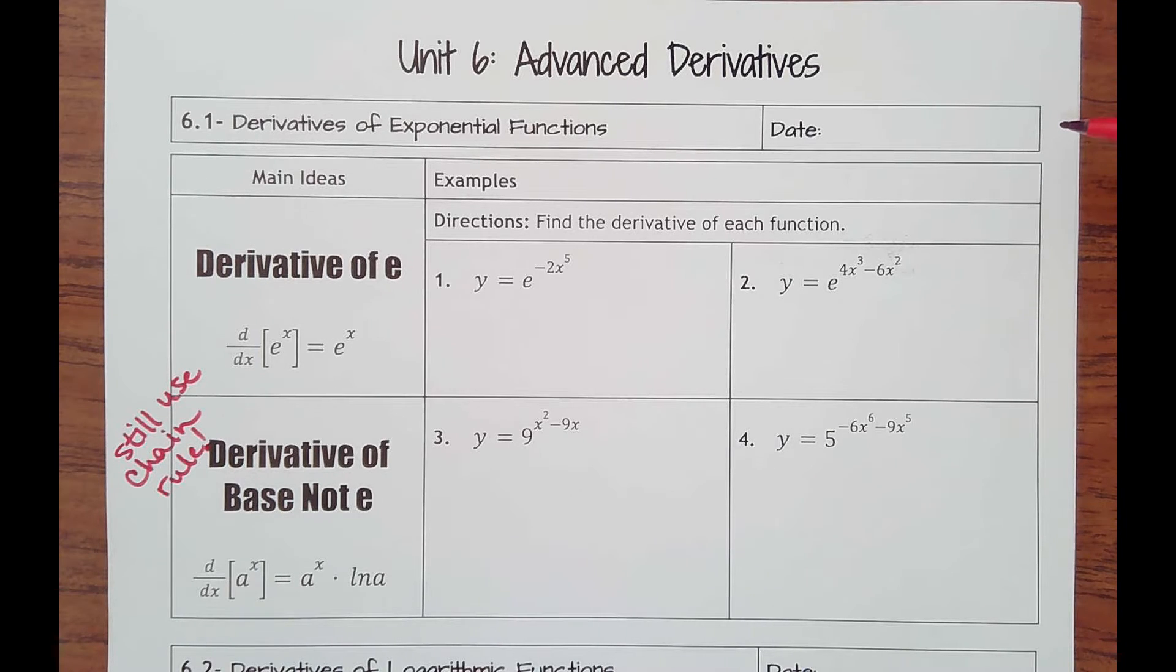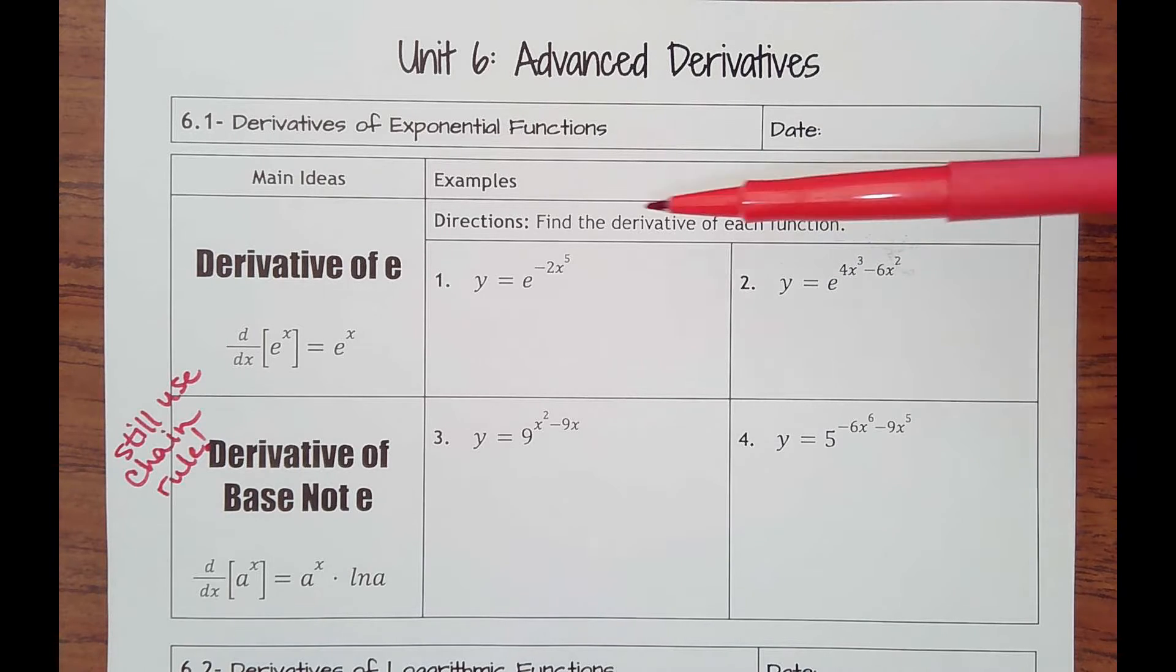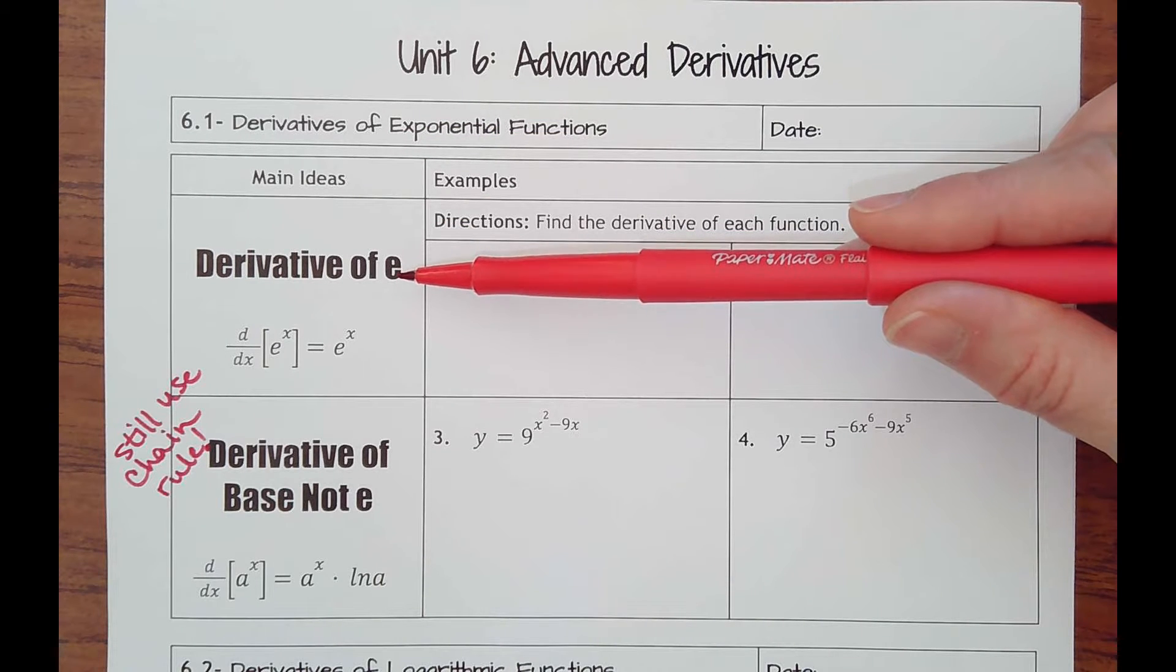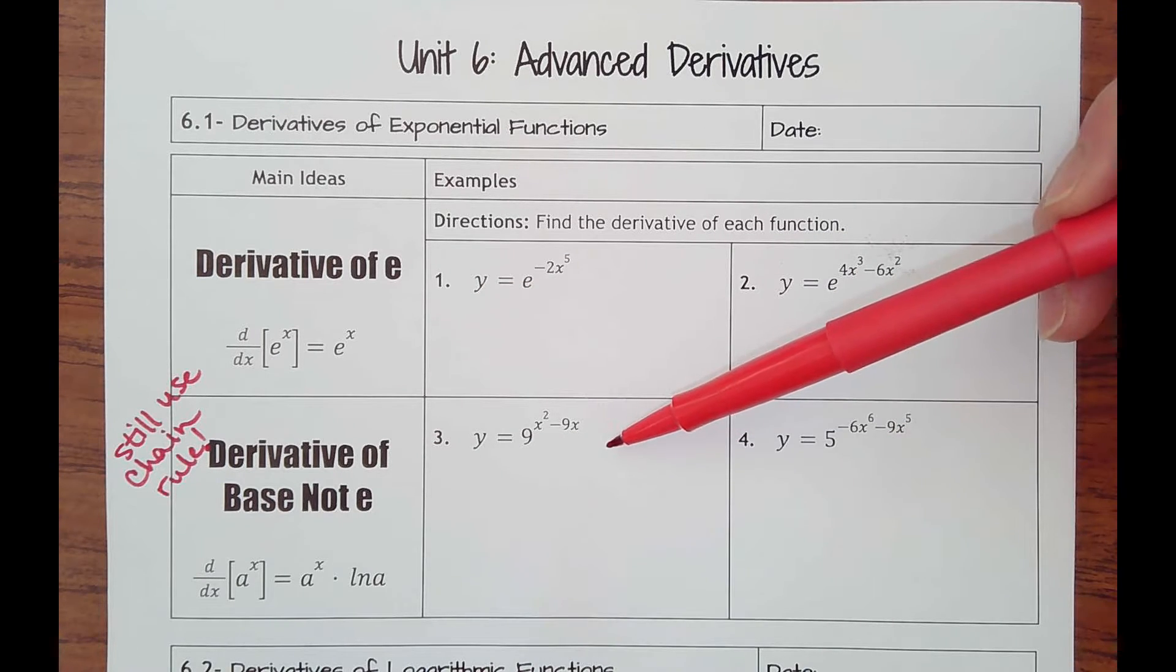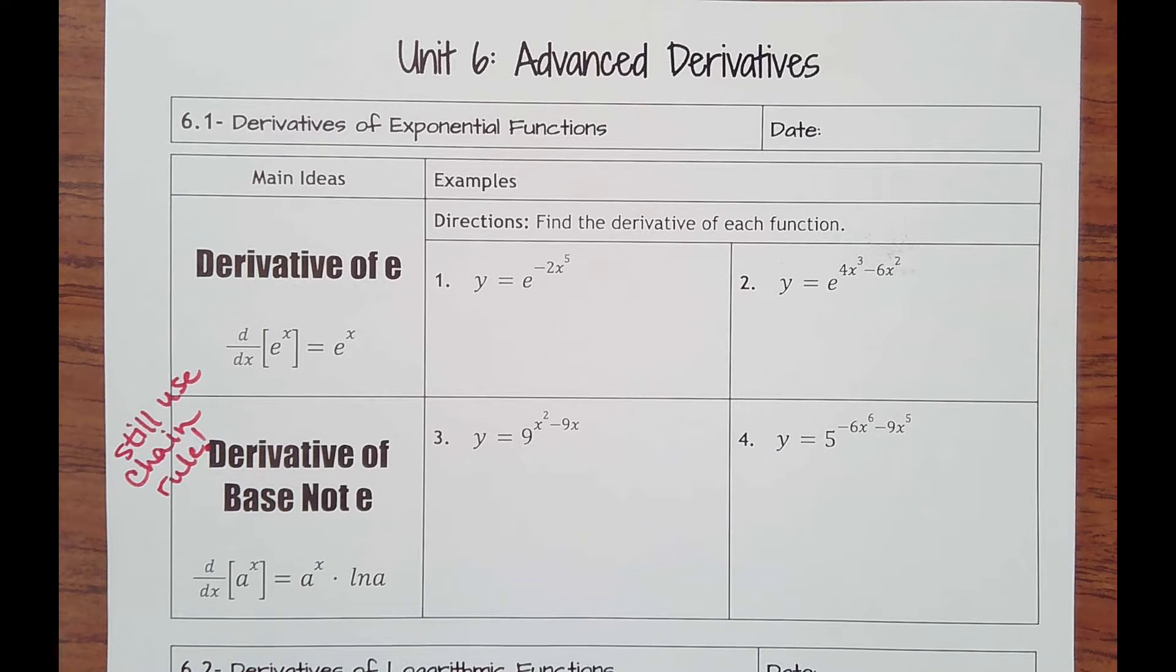Unit six is called Advanced Derivatives, and you might be thinking, well, we've already been doing pretty advanced ones. Yes, but these are having different functions like e. Remember, e is really a number, it's 2.7 something, so it's irrational like pi. We have exponential functions, we're going to have natural logs and logs. Those are what we mean by advanced, just different.